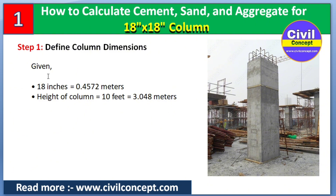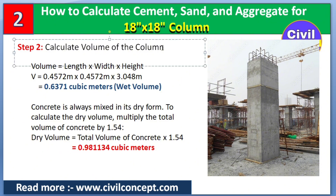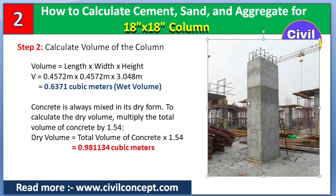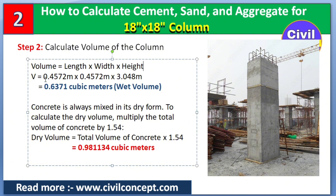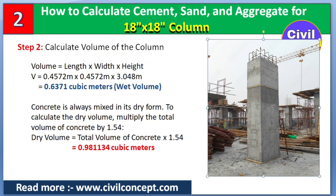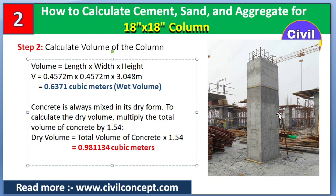In step two, we will calculate the volume of the column. Volume of column is simply length multiplied by width multiplied by height. Length is 0.4572 meters, width is 0.4572 meters (18 inch by 18 inch), and height is 3.048 meters. After calculating, we get 0.6371 cubic meters. This is the wet volume of concrete for the column. To convert it to dry volume, we multiply by 1.54.